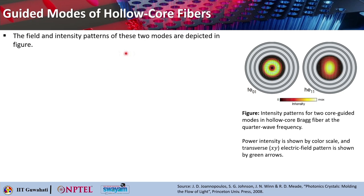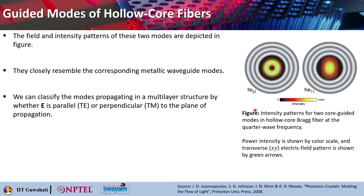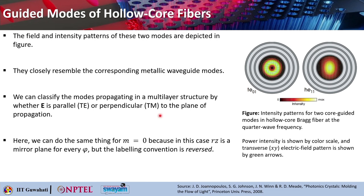You can also see from the field intensity patterns that they basically closely resemble the metallic waveguide modes. These are the modes in hollow core Bragg fiber at quarter wave frequency: the two guided modes are shown here — the first one shows TE₀₁ and this one is HE₁₁. The color bar shows the power intensity, and the transverse (xy) electric field patterns are basically shown as green arrows in both plots. Looking at these modes, we can classify the modes propagating in a multilayer structure by whether the electric field is parallel to the plane of propagation or perpendicular to it — so you can call it TE or TM.